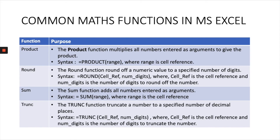Next is TRUNC. The TRUNC function truncates a number to a specified number of decimal places. The syntax is: =TRUNC(cell_reference, number_digits), where you write the cell reference and then the number of digits to truncate the number.